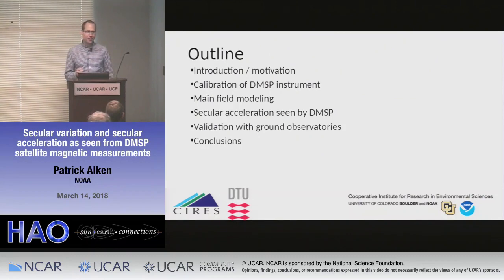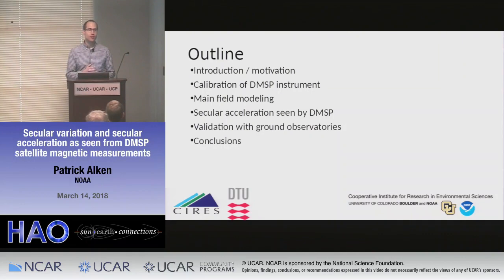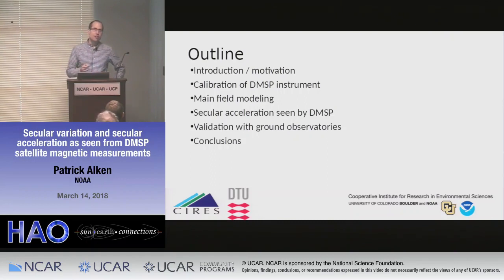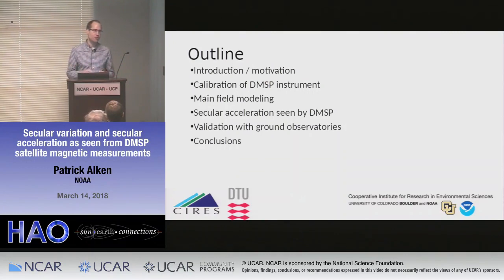ERSTED is actually still flying. It was launched before CHAMP in 1999. The absolute scalar magnetometer failed in 2005, and that was used to calibrate the vector measurements, so there were no vector measurements after 2005. However, ERSTED continued to provide scalar measurements by taking the modulus of the vector magnetic field up until about 2013. The satellite started tumbling sometime around 2010–2011, and the amount of data actually obtainable during this period was incredibly sparse — not really useful for filling in the gap period.